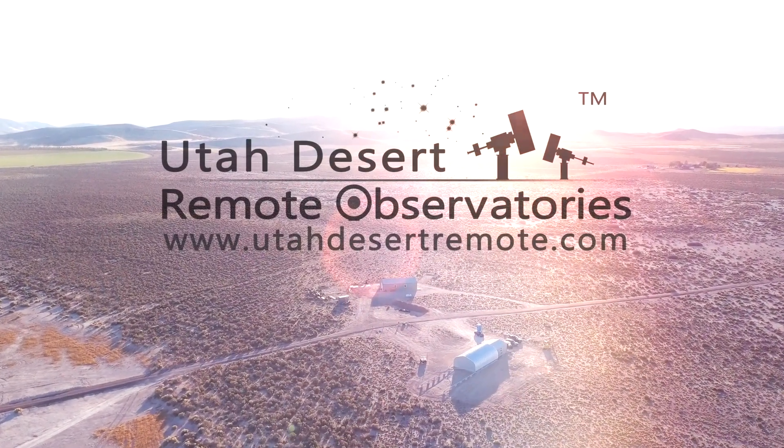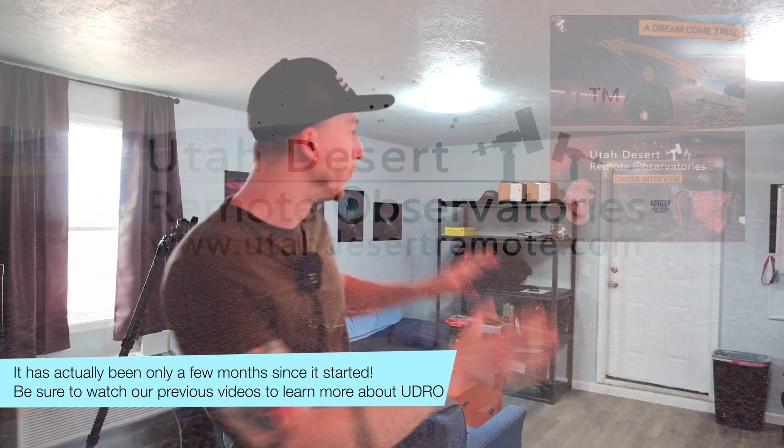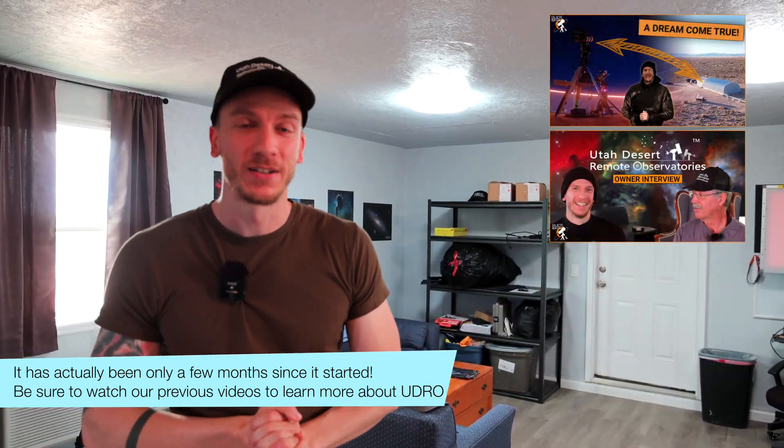We are at Utah Desert Remote Observatory again and I want to show you guys what's in there now after like a year and a half of being here. So now it's completely full almost and I want to show you all the different types of scopes and mounts. I think it's very interesting to take a look at all these different astro products. So let's go in there and see what we have.